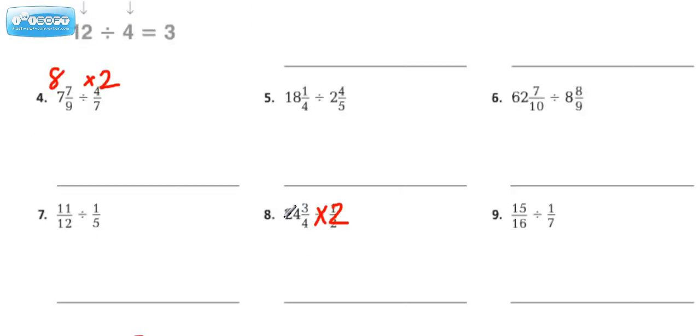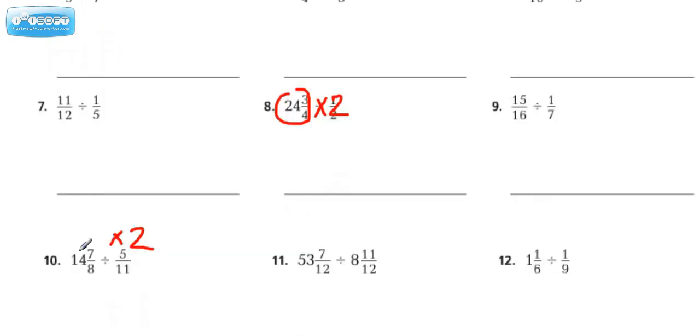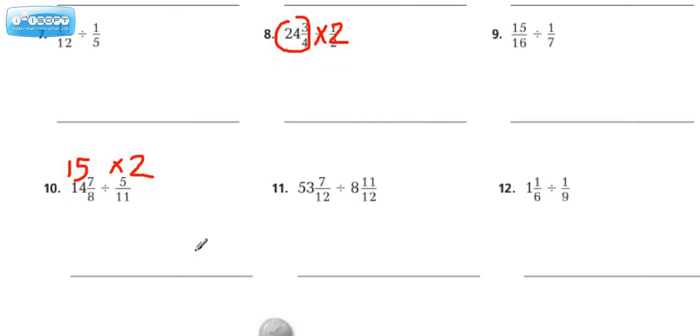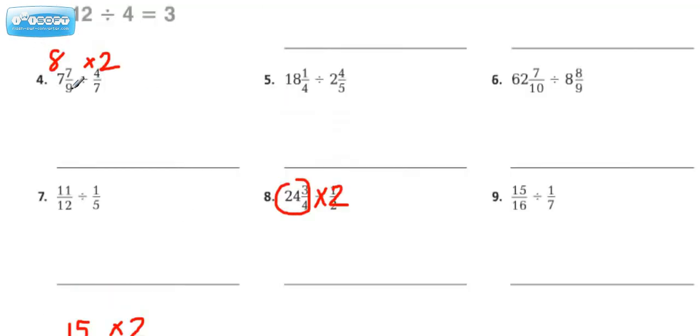This is kind of close to 25, this whole thing right here. So if we do 25 times 2, we should be good to go for number 8. And then this one, if we just kind of call this 15, because if this were 8/8ths, it would be actually a whole. So let's call that 15. Find 15 times 2 and put that on the space. And that's how you're going to tackle the ones that have a divisor which is close to a half.